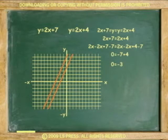Subtract both sides by 2x and 7. 2x minus 2x equals negative 7 plus 4. 0 is not equal to negative 3.